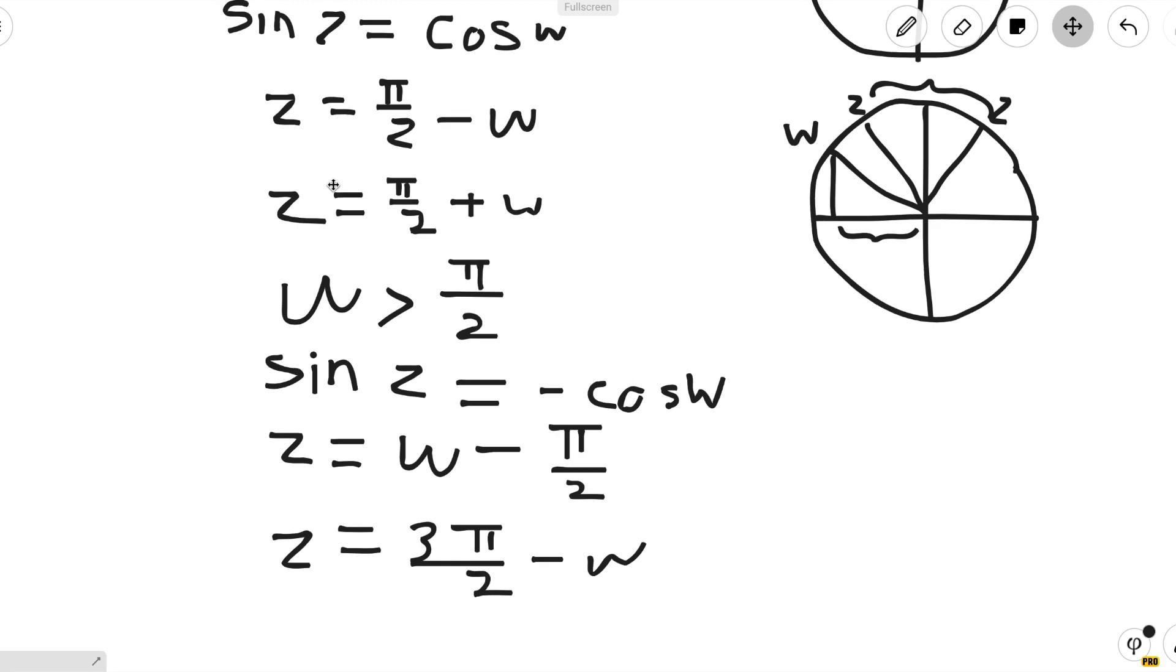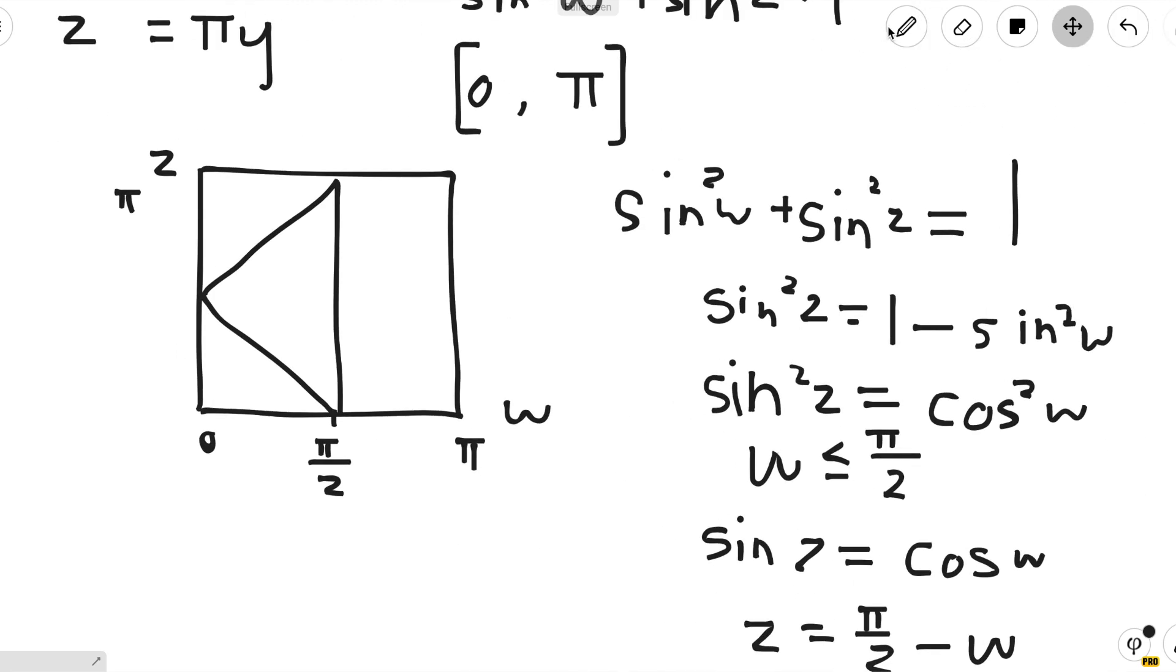So we have these bounds for z when w > π/2. For these values, we just get this graph right here. So the region that satisfies the inequality would just be this diamond shaped region connecting the midpoints of the square.